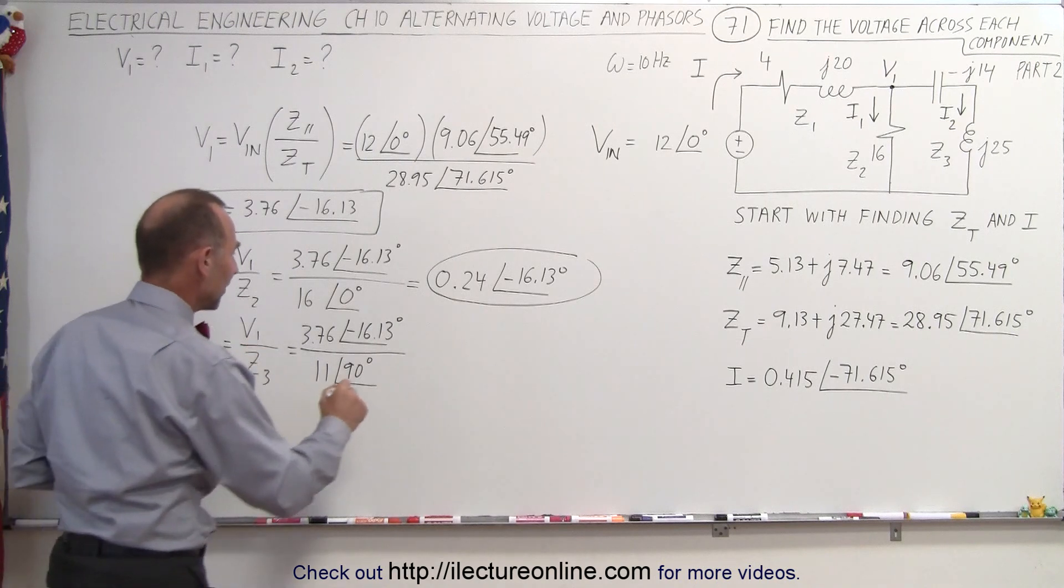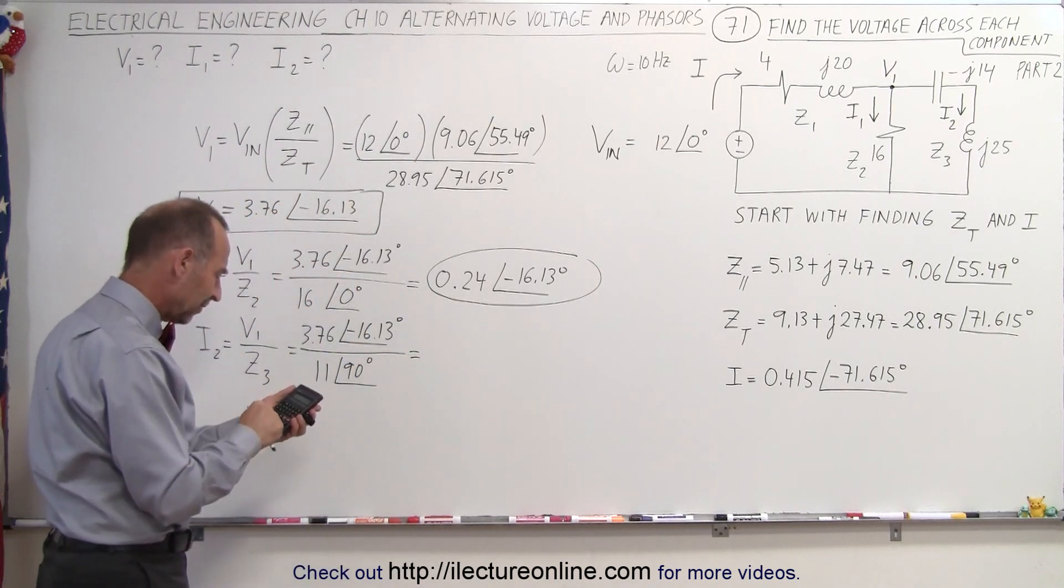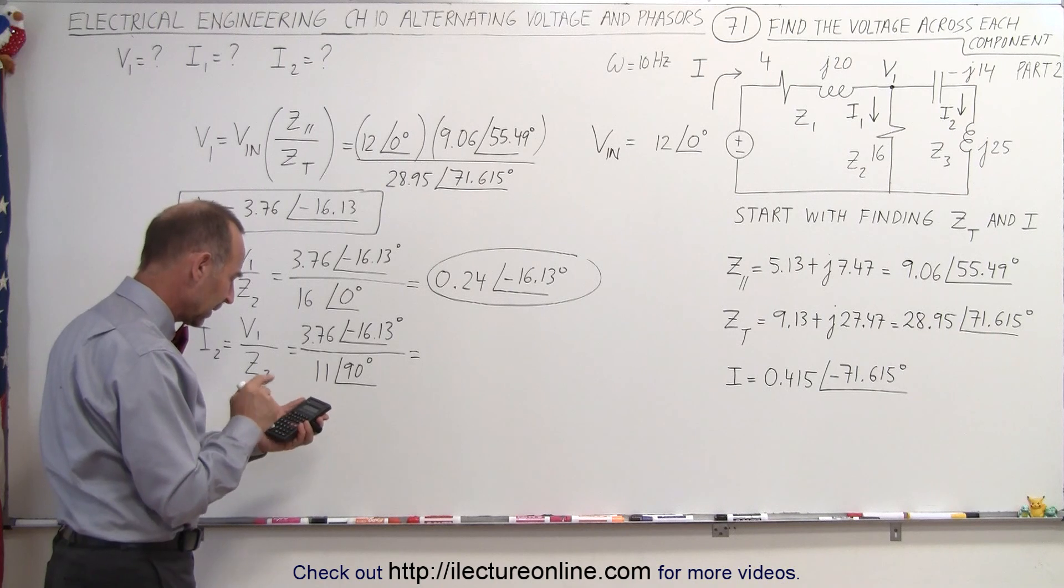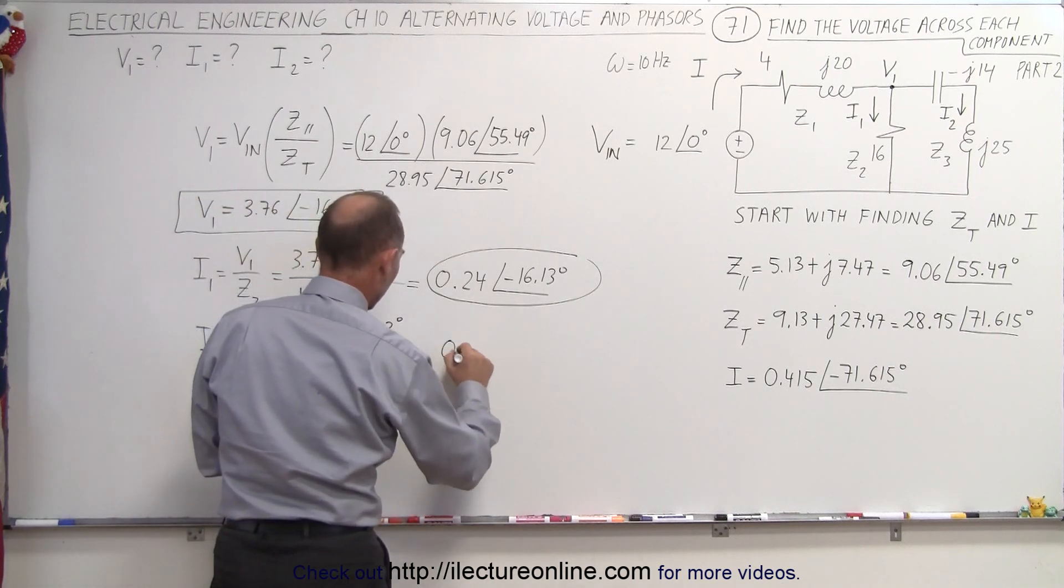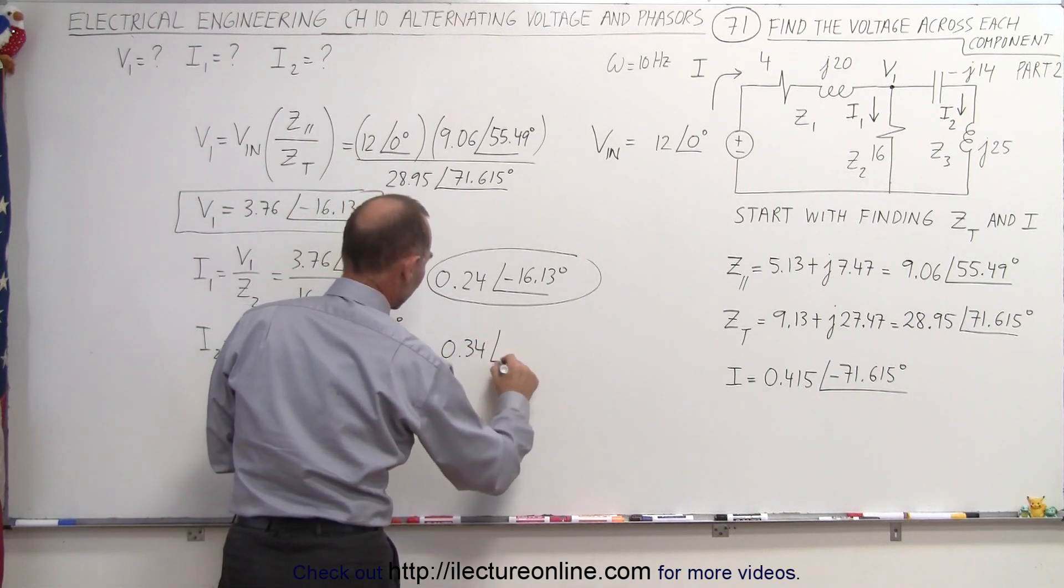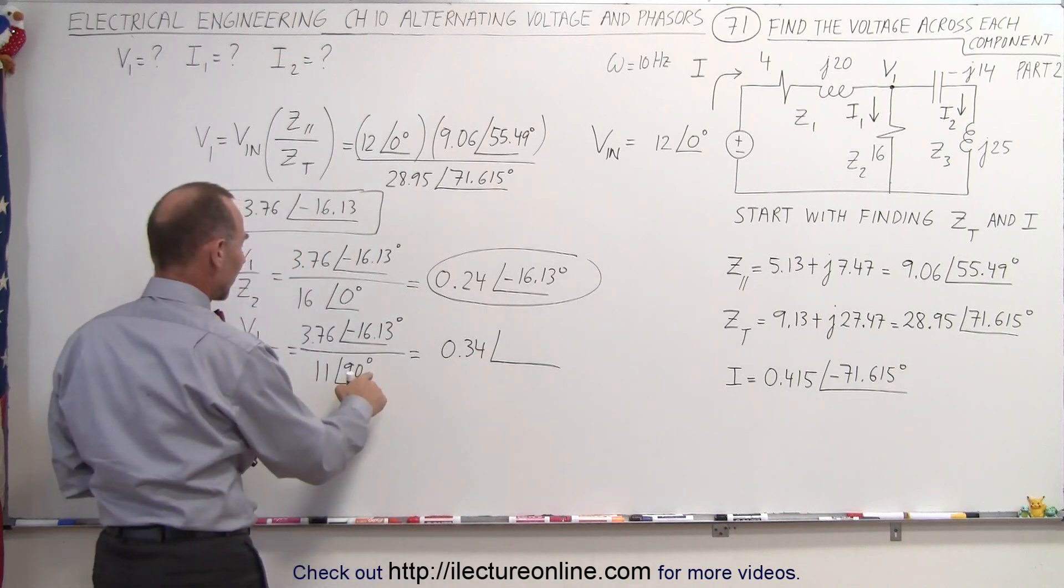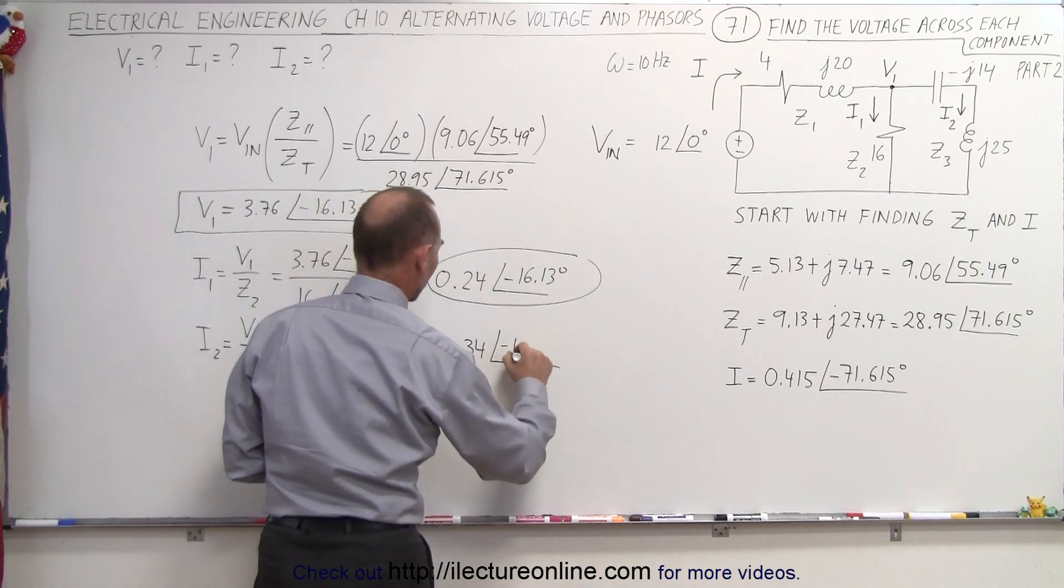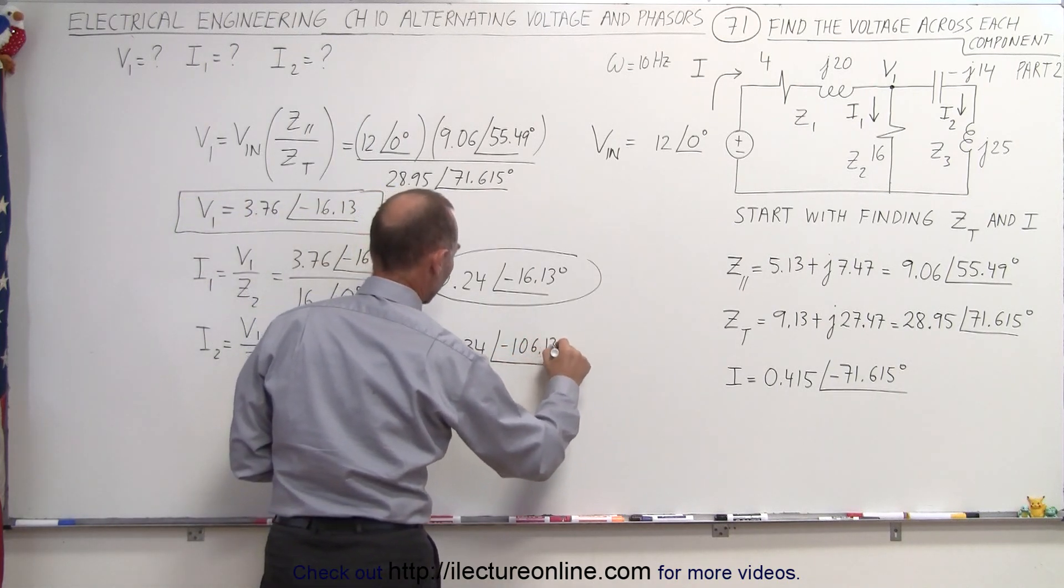All right. When we divide that in there, we get 3.76 divided by 11. So it gives us 0.34 for the magnitude of the current and the phase angle. We subtract 90 from that. We get minus 106.13 degrees.